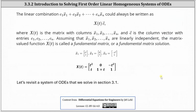The linear combination c1 times x1 plus c2 times x2 all the way through plus cn times xn could also be written as x of t times vector c, where x of t is a matrix-valued function whose columns are x1 through xn, and vector c is a column matrix with entries c1 through cn. Assuming that x1 through xn are linearly independent, the matrix-valued function x of t is called a fundamental matrix or fundamental matrix solution. For the previous example, x of t would be the two-by-three matrix-valued function shown below.